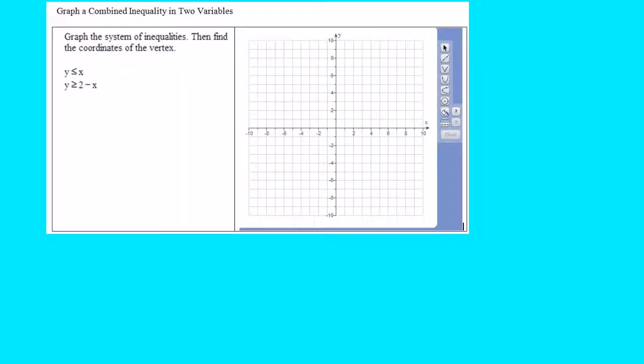Hi, we're going to graph a combined inequality. I promise you this is an intermediate algebra level problem. It's leading into a college level problem called linear programming, but this problem itself will not be difficult. Notice it says graph the system of inequalities, then find the coordinates of the vertex. Let's do the graphing first.